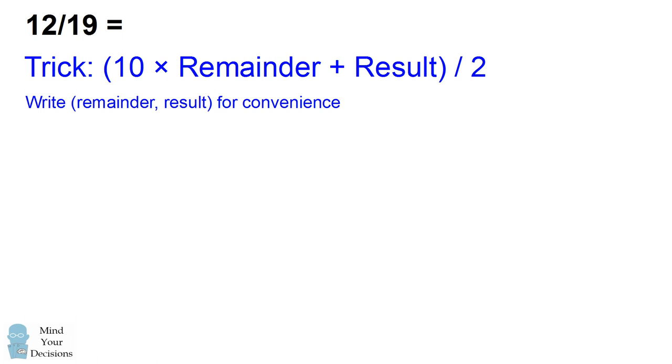I'm going to show you another example. Let's say we want to divide 12 by 19. We have this process of repeatedly dividing by 2. And in order to make it a little easier, I'm going to write the result as remainder result, because the two-digit number, when we combine the remainder and the result, is the next value to divide by.